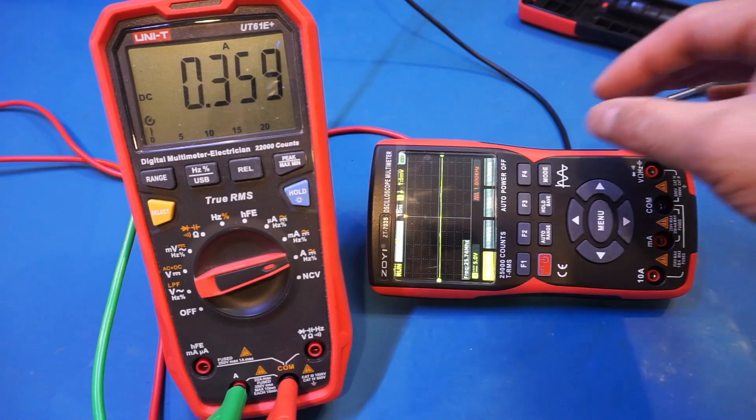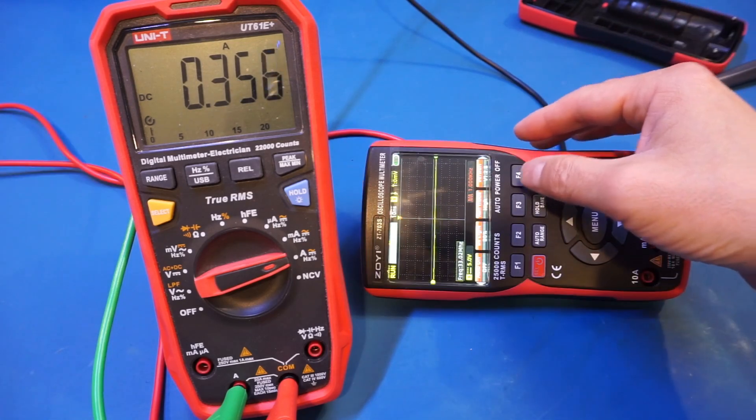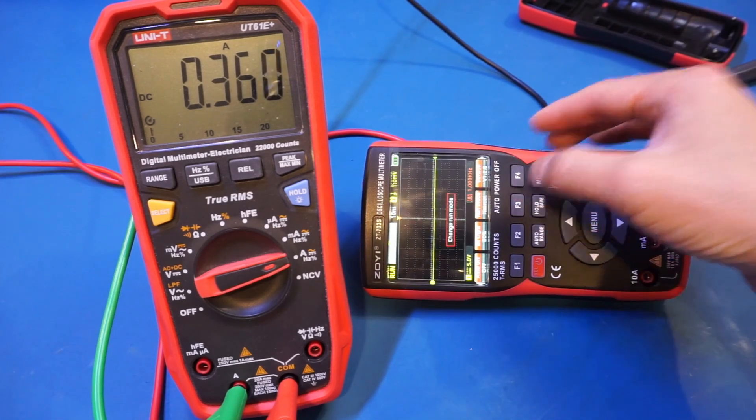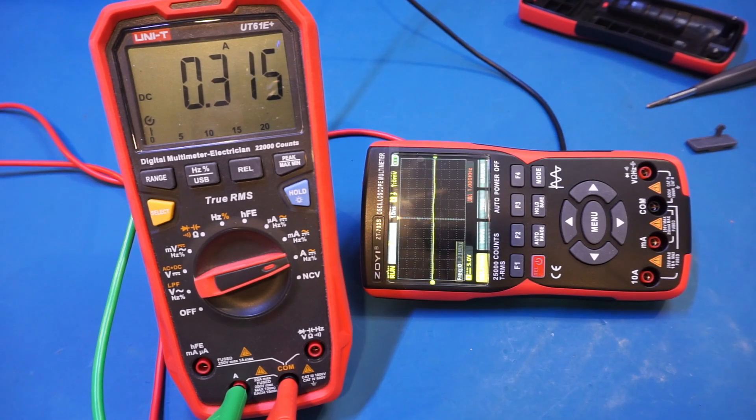So we're at 360 mA. And what was the number before? Let's change it back. Let's change the run mode to normal. Okay, so the difference is really not that big. It's only like 50 mA.